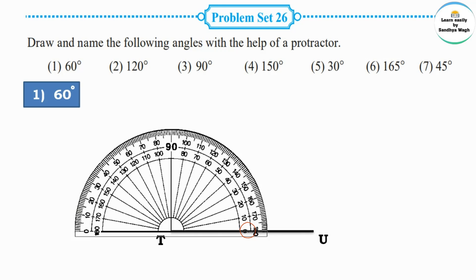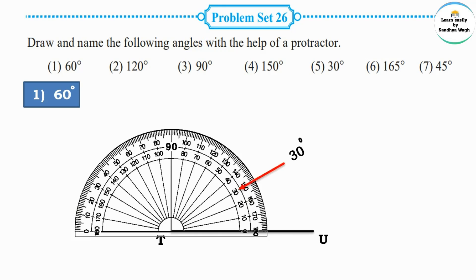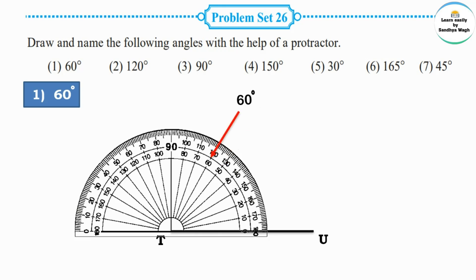Counting from the right side: 0 degrees, 10 degrees, 20 degrees, 30 degrees, 40 degrees, 50 degrees, 60 degrees. This is the 60 degree marking. We mark one point here and name that point S.